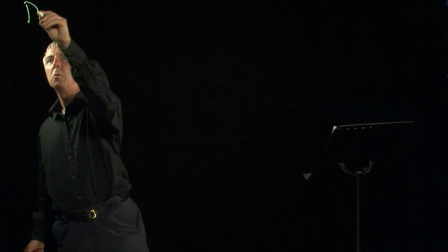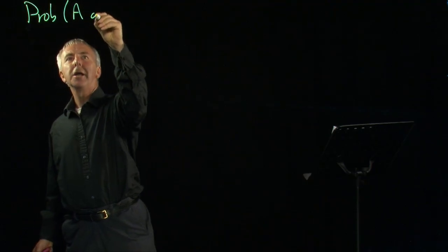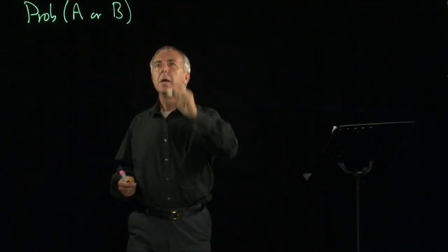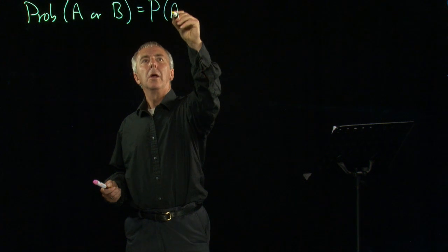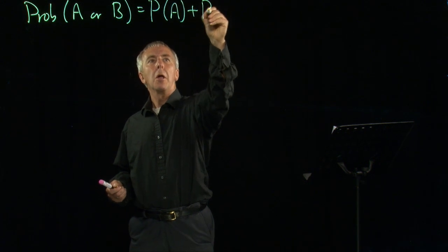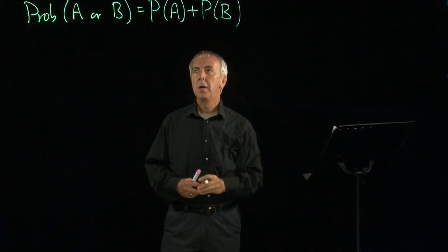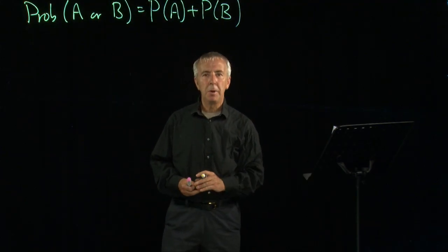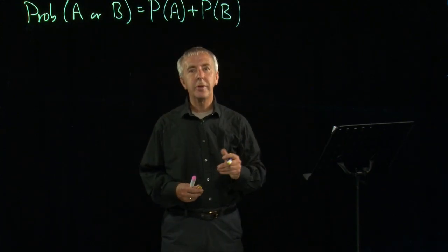The first one is to work out the probability of one event A or another event B. And I'll put the answer up and then we can look at an example. All we do is simply add the separate probabilities together. So the probability of A or B is the probability of A plus the probability of B as long as